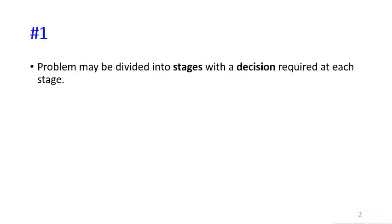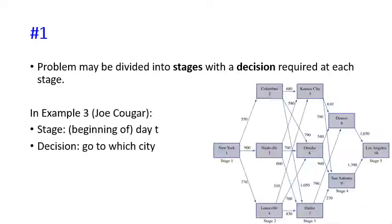A decision is required at each stage. In the example of Joe Cougar traveling from New York to Los Angeles, we divide his journey into days. Day one goes from New York to any of three cities at stage two, then day two to any city at stage three, day three to stage four, and day four from Denver or San Antonio to reach Los Angeles. The stage may be defined as day T, or more precisely, the beginning of day T.